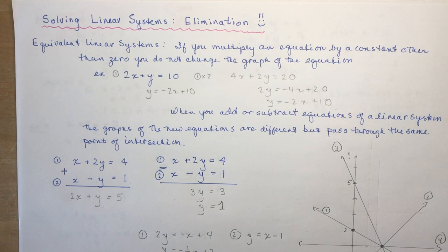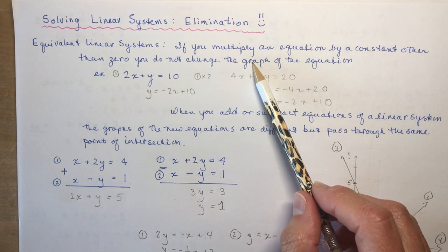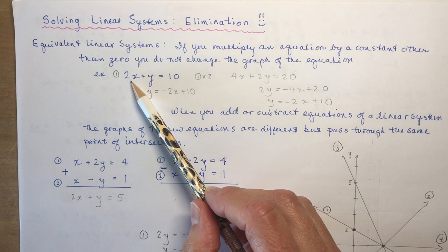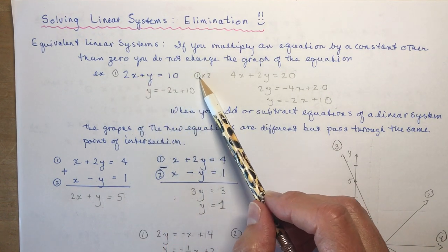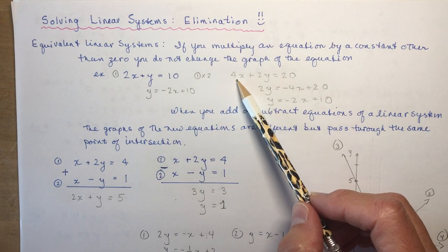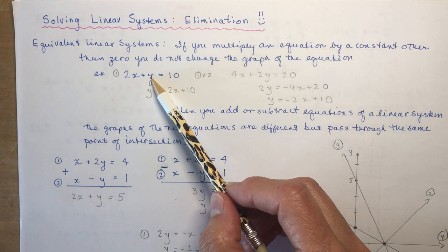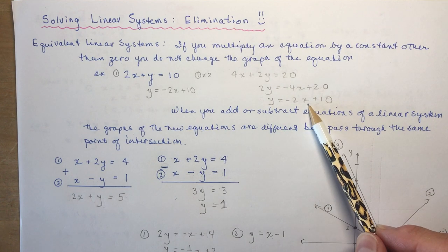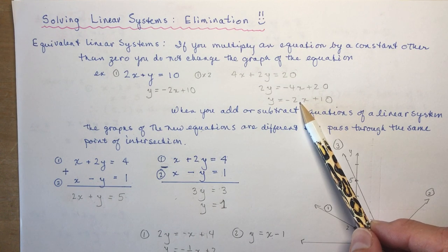First we're going to talk about equivalent linear systems. If you multiply an equation by a constant other than zero, you do not change the graph of the equation. For example, I took 2x + y = 10 and multiplied it by 2 — remember you have to multiply each and every term by that constant — giving 4x + 2y = 20. When rearranged into y = mx + b format, both equations are exactly the same, meaning they produce the same graph.